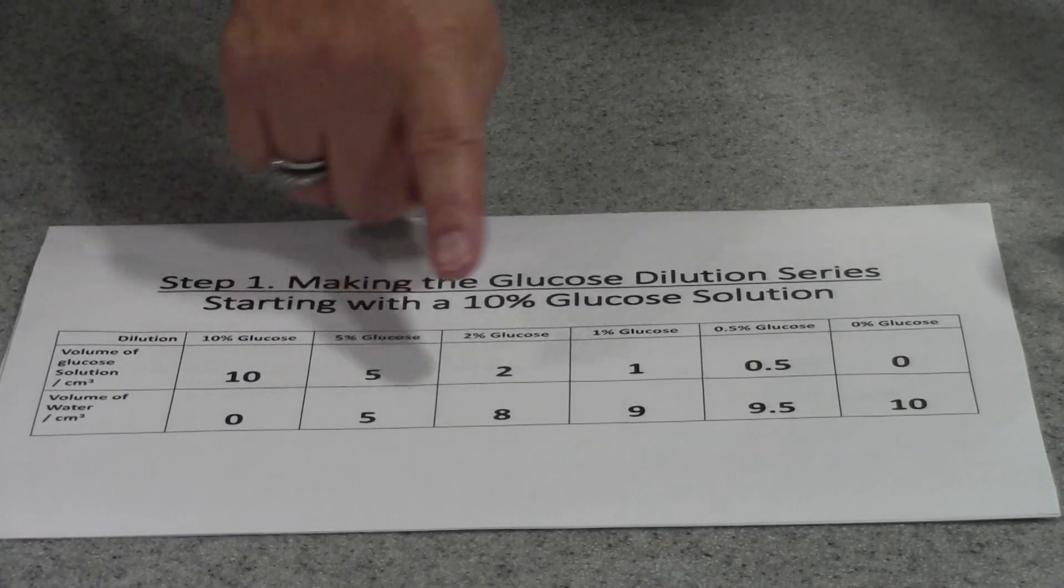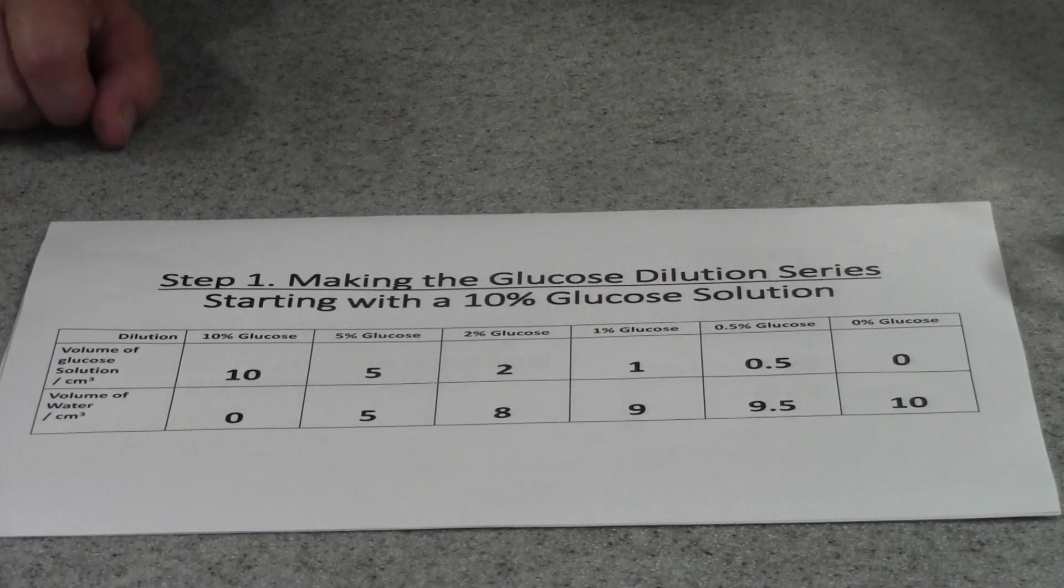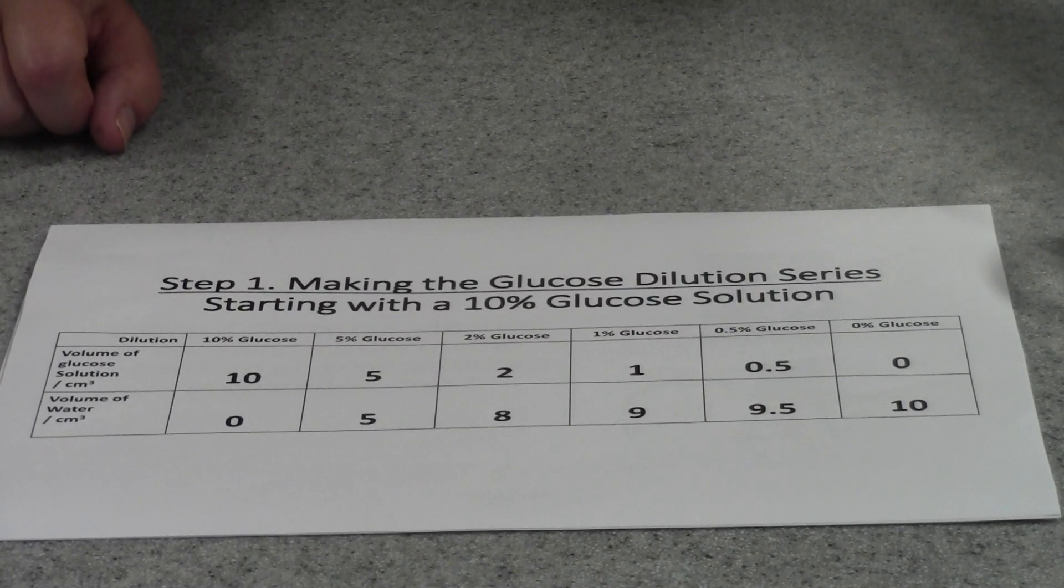So we're going to end up with a range of 10%, 5%, 2%, 1%, 0.5%, and 0% glucose.